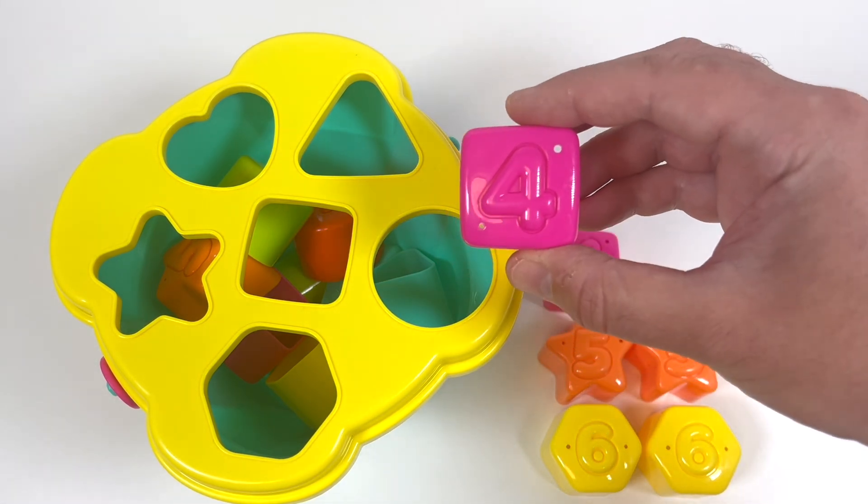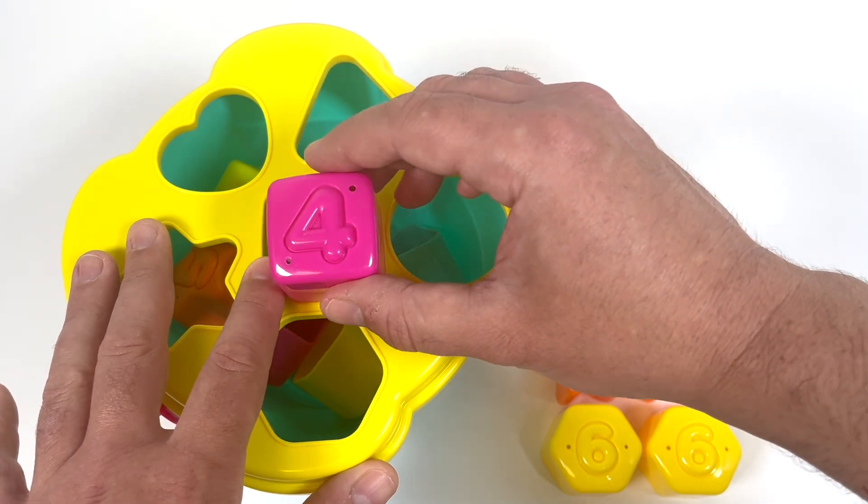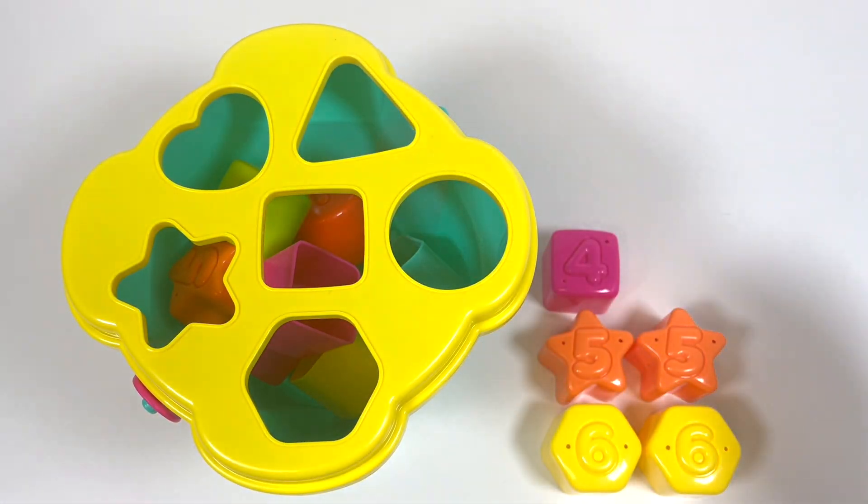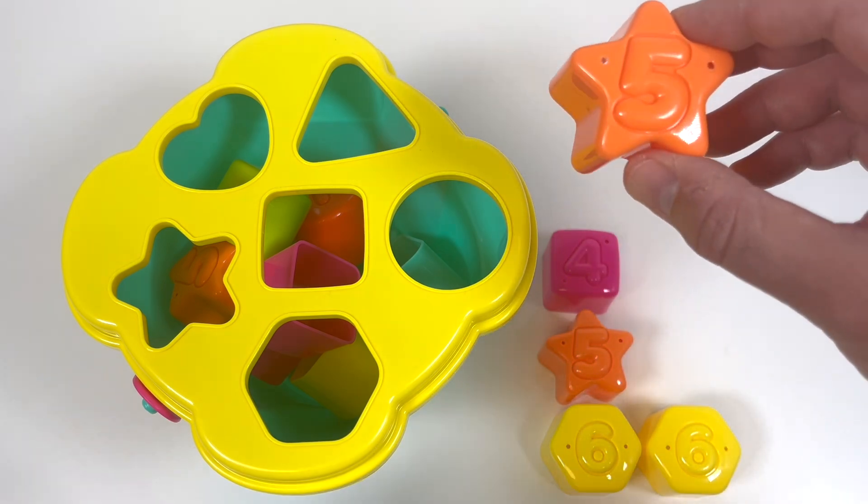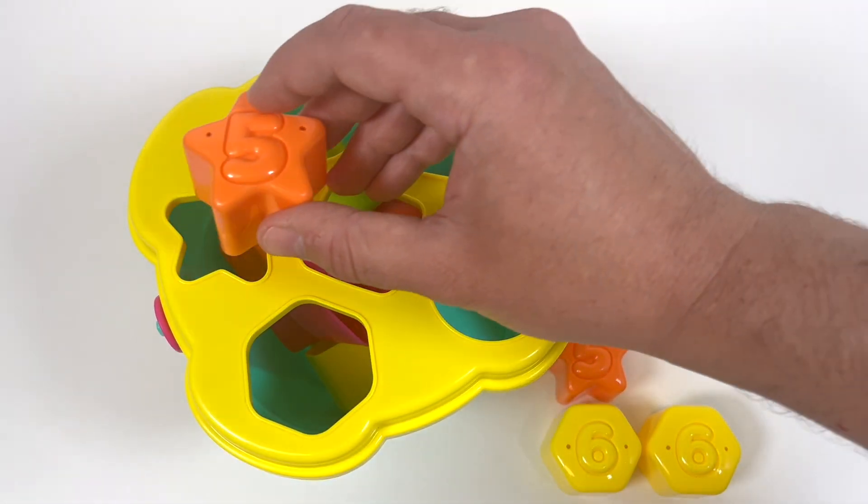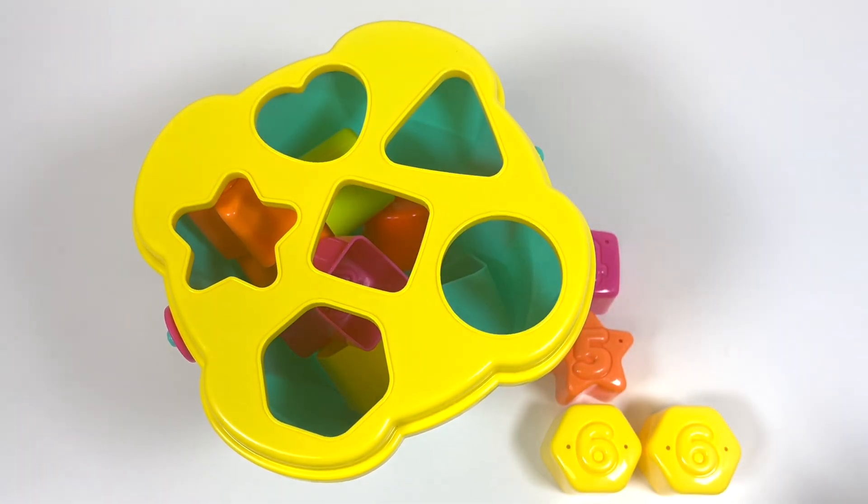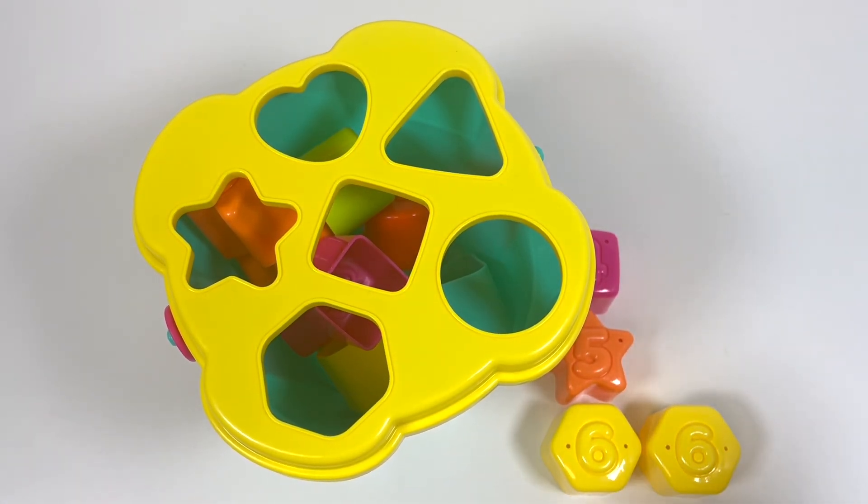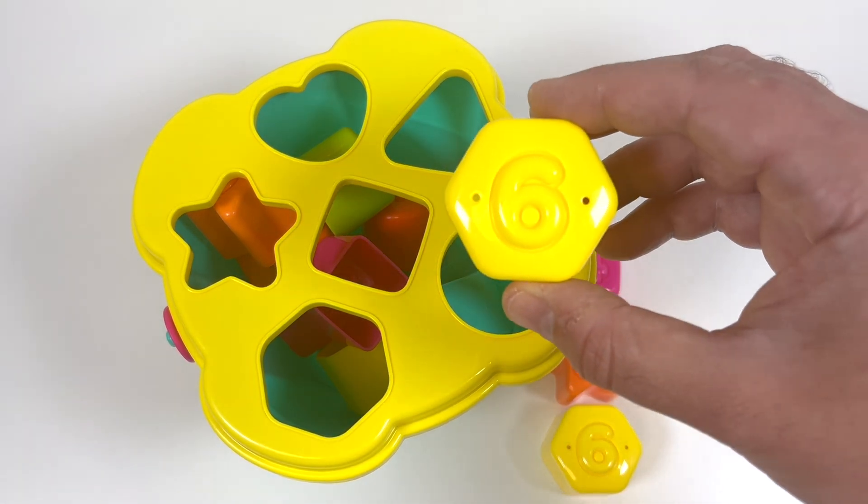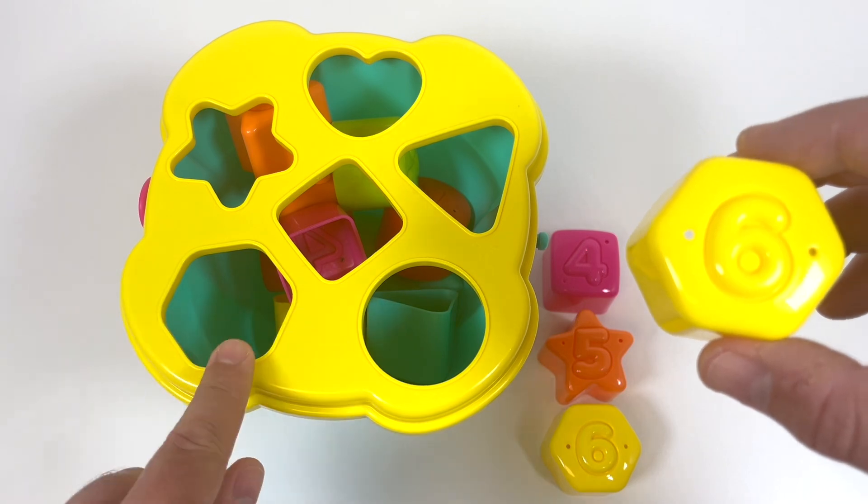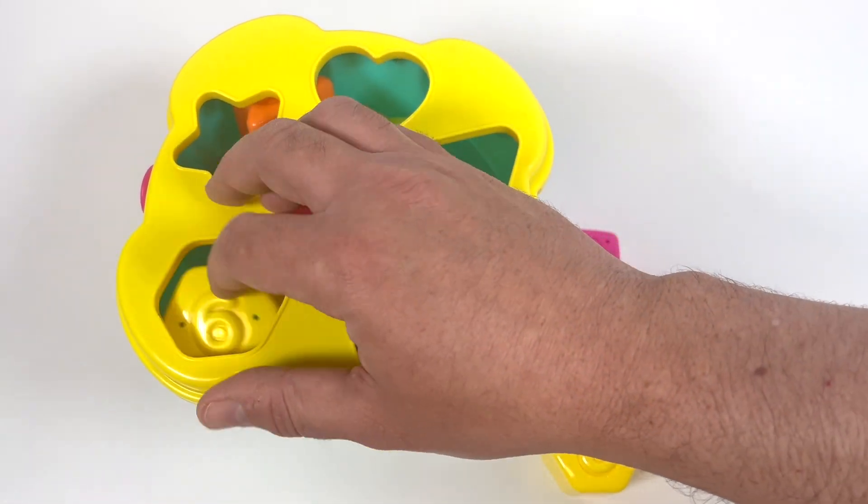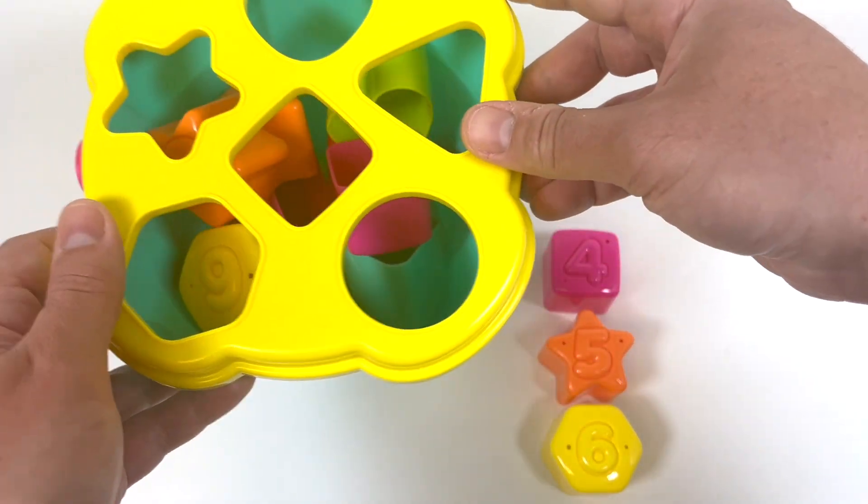Then we've got the pink square. Remember, it goes right in the middle. Our orange star goes right here. And our yellow hexagon goes right down here.